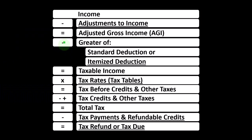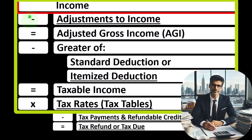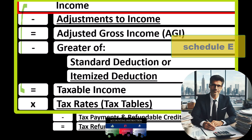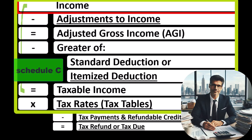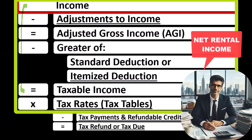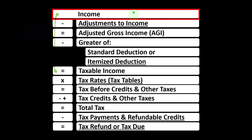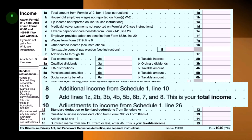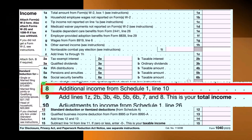Rental income reported on Schedule E flows into Line 1, Income, of the Income Tax Formula. The first half of the formula is basically a funny income statement — income minus deductions resulting in taxable income. The Schedule E, similar to a Schedule C, has an income statement format: rental income minus rental expenses, resulting in net rental income, which flows from Schedule E to Line 1, ultimately rolling into Line 8, Additional Income from Schedule 1, on Form 1040.